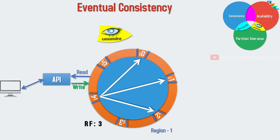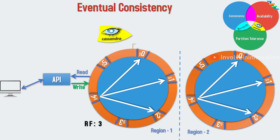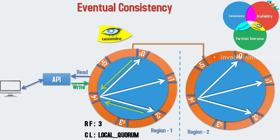We can even replicate across different regions for higher availability and increased fault tolerance. For example, with two regions — US East and US West — there are different consistency levels. Local 1 means the coordinator expects successful acknowledgement from one replication node in the local cluster. Local quorum means the coordinator expects 51% acknowledgement from the local region, i.e., 2 out of 3 nodes in US East. Each quorum means the coordinator expects 51% acknowledgement from all regions, i.e., 2 out of 3 replication nodes from both US East and US West.